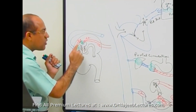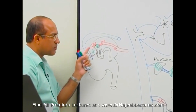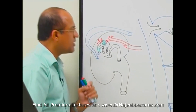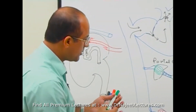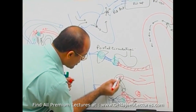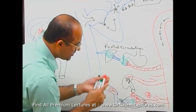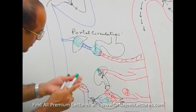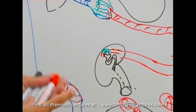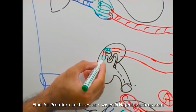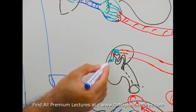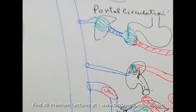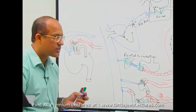This is also a portal system — another example of portal circulation. To summarize: afferent arteriole brings blood to the glomerular capillaries, these come into the efferent arteriole, then a second set of capillaries, and eventually they collect into a vein. Are there any questions up to this point? Everything is clear.